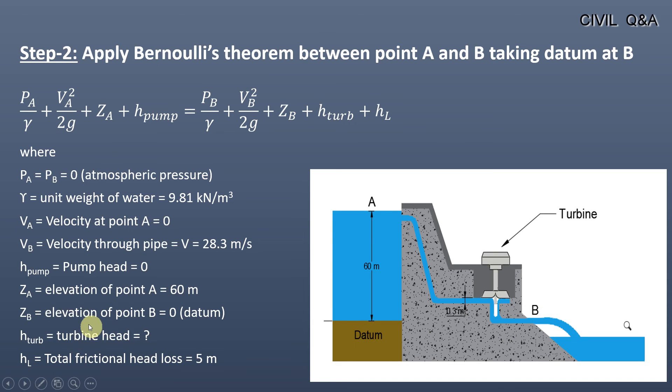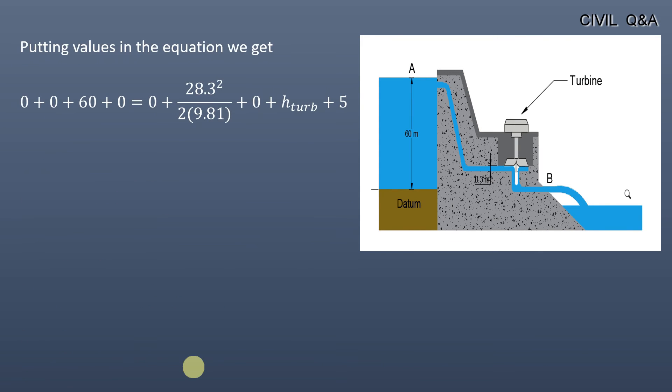We have to determine the turbine head from the equation, and the total frictional head loss through the system is equal to 5 meters. Putting values in the above equation and solving for the head of the turbine, we get the value of the head of the turbine as 14.18 meters.